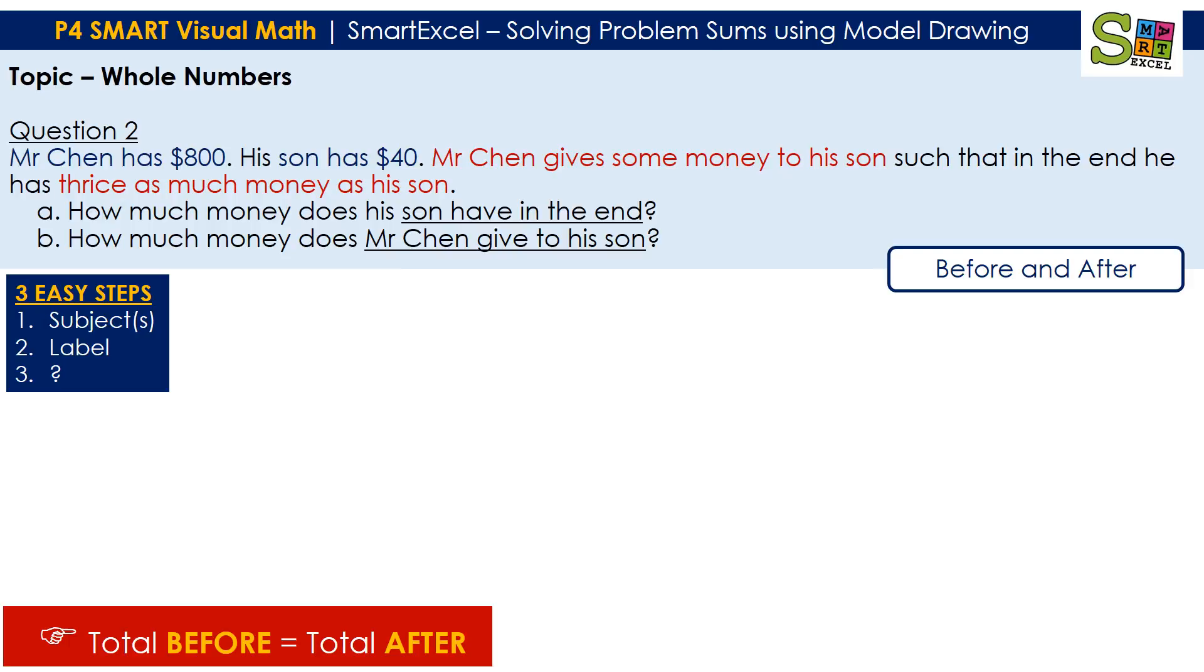So like I mentioned before, to identify the subjects that are in the model, which are Mr. Chen and his son. So we have two models for this one. We have $800 for Mr. Chen and $40 for his son. Then he mentions also that Mr. Chen gives some money to his son such that in the end he has three times as much money as his son.